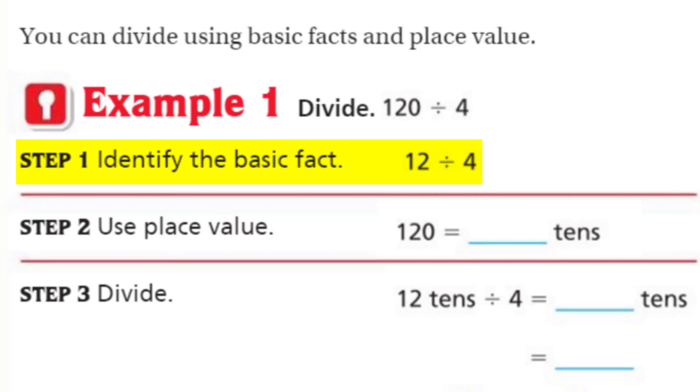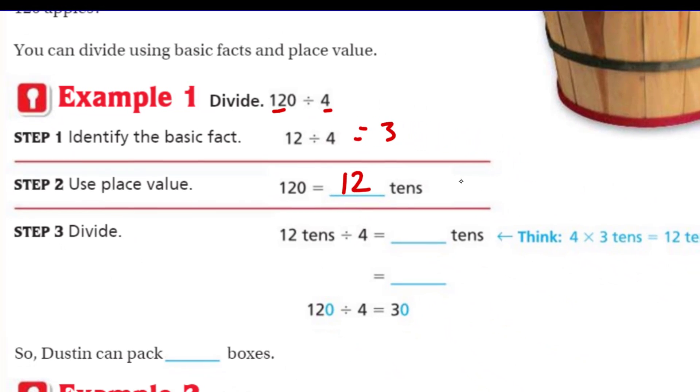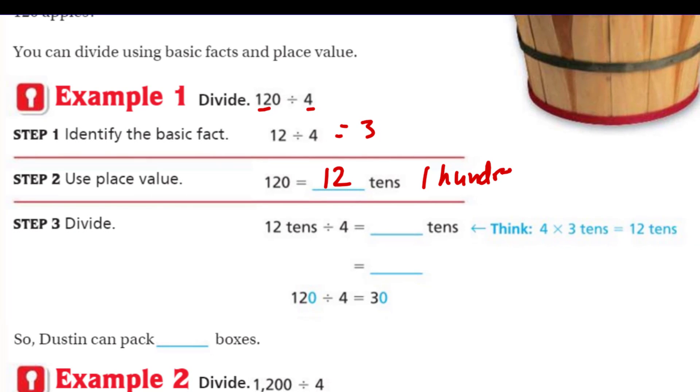For example one, it says divide. We have 120 divided by four. Step one says identify the basic fact. I like that. The basic fact. Yes, it's that little 12 right there. 12 and the four because 12 divided by four, everybody knows it's three. So easy. But does that help us? It does because step two says use place value. So then 120 is going to be equal to how many tens? Well, that should be 12 tens, right?